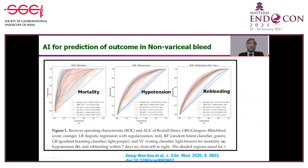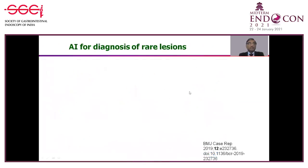In predicting outcomes in non-variceal bleeding, we have traditionally used the Rockall score and Glasgow score. Four AI-based algorithms have been tested against these two scores, and all four seem to perform better for prediction of mortality, hypotension, and rebleeding. In the future, these conventional scores will likely be replaced by AI-enabled software.